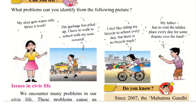Now, let us look at the third picture. The child says: 'I feel like riding my bicycle to school every day, but there is no bicycle track.' In our cities and towns, there is no separate bicycle lane — a part of the road marked specially for people to ride their bicycles. So this girl wants to take her bicycle to school, but she cannot because of heavy traffic and no separate place marked for her to travel safely.